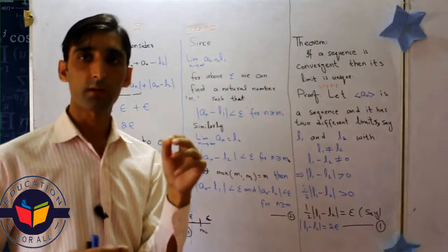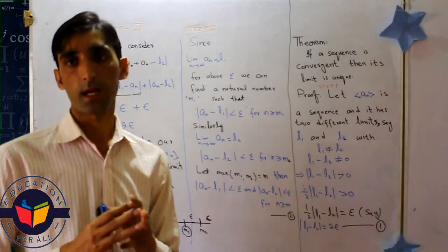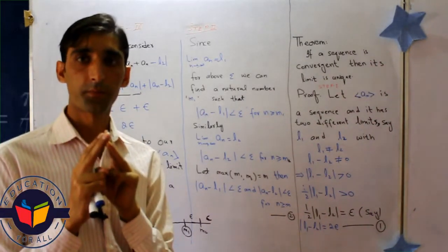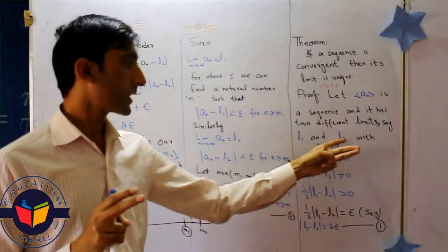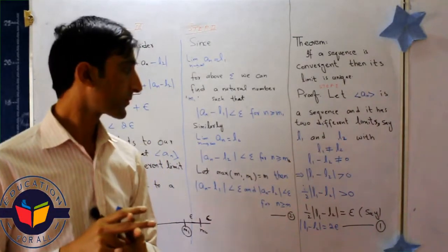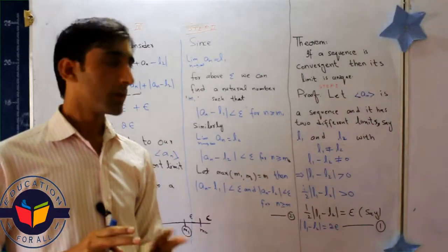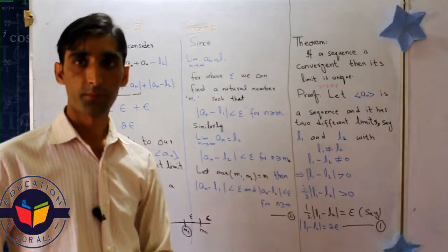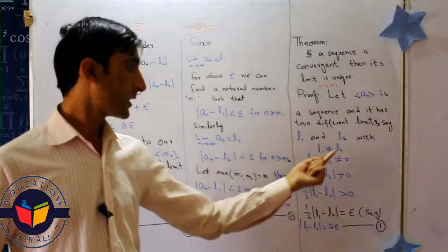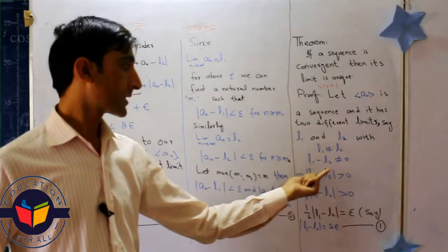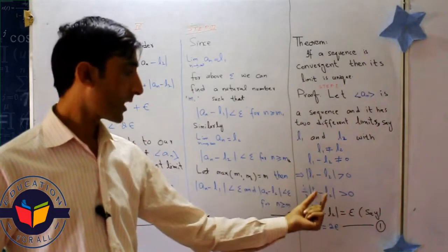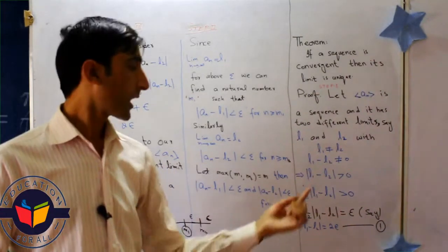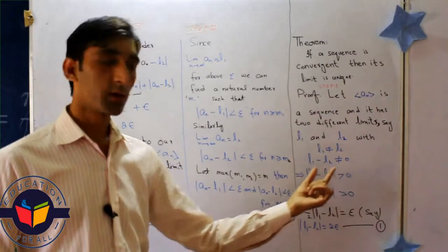To prove this theorem, we take three steps. The first step: we make a contradiction. The contradiction is that a_n has two limits, one is l1 and one is l2. Now if both limits are different, we know l1 is not equal to l2. If I take the absolute value of l1 minus l2, then it should be greater than zero. That means l1 minus l2 has positive value.